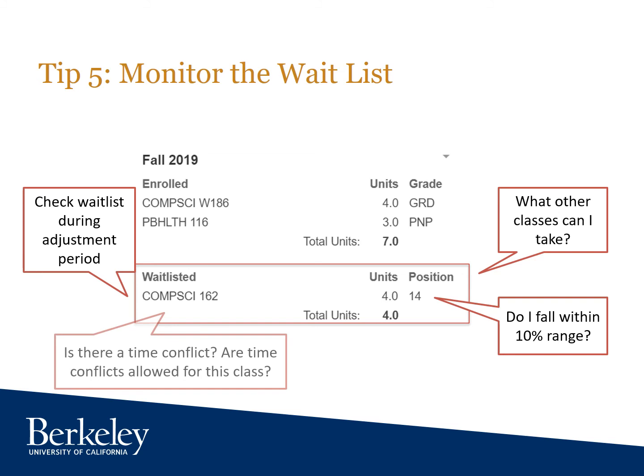Another good hint: is there a time conflict? Most computer science classes are set up to allow time conflicts, but sometimes we have classes that do not. If you have a time conflict and it's not permitted for a particular class, you'll end up on the waitlist where you will stay indefinitely — even if seats are available, you will remain stuck. My best recommendation is to go to the EECS 101 section of piazza.com to see if time conflicts are permitted. You may also be able to see that information through the enrollment process on Cal Central.